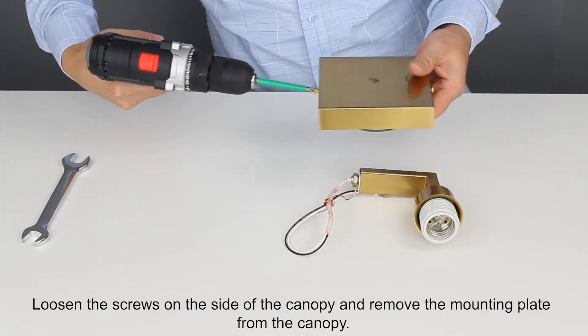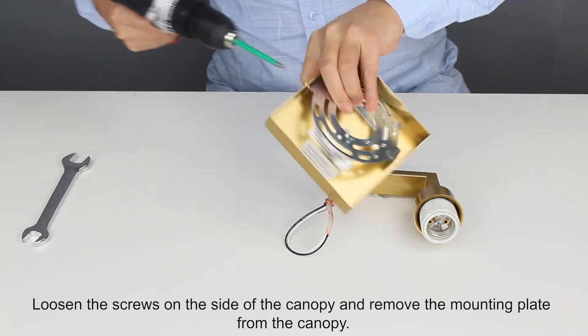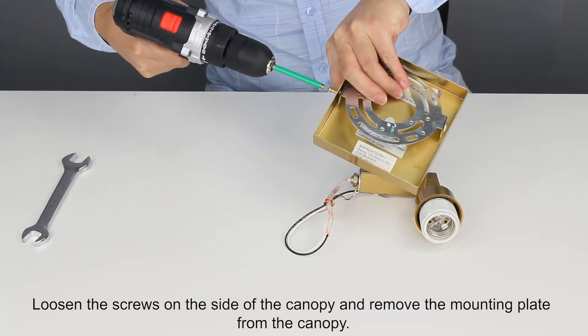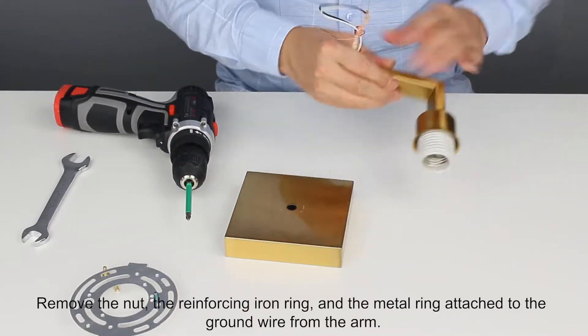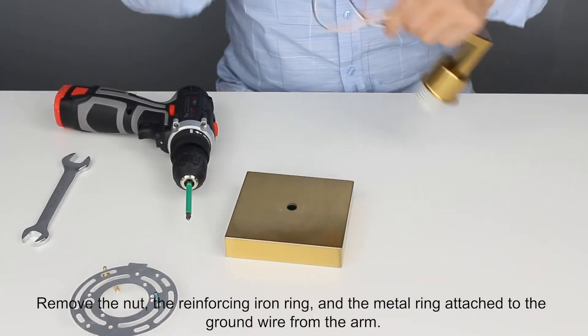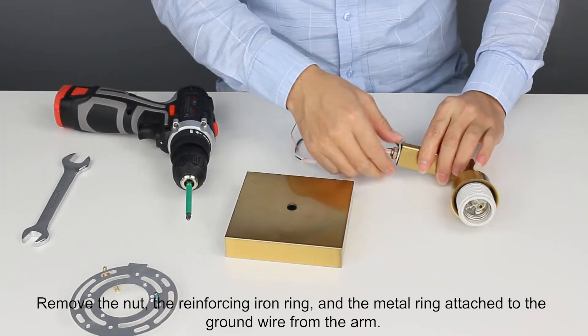Loosen the screws on the side of the canopy and remove the mounting plate from the canopy. Remove the nut, the reinforcing iron ring, and the metal ring attached to the ground wire from the arm.